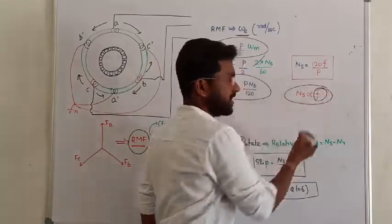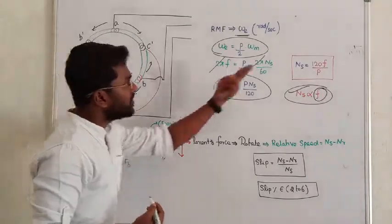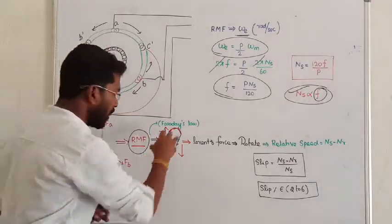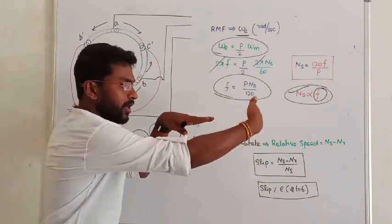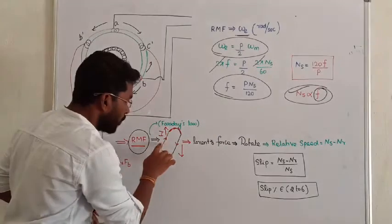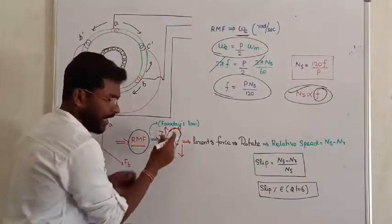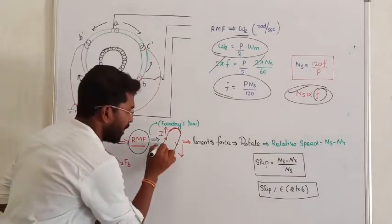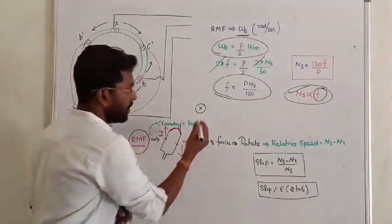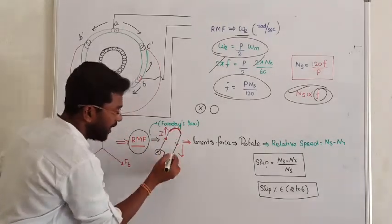When the supply frequency changes, the synchronous speed changes accordingly and the rotating magnetic field rotates at the new speed. The rotating magnetic field induces an EMF which drives a current in the rotor conductors. The current flowing into the conductor is represented by a cross, and the current coming out is represented by a dot.